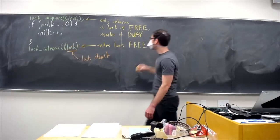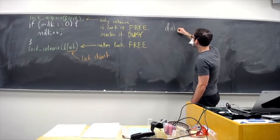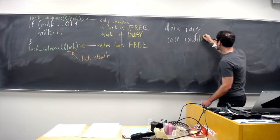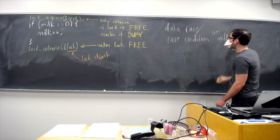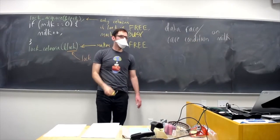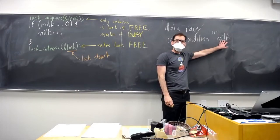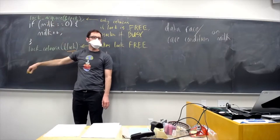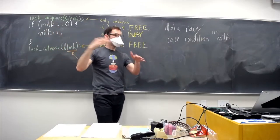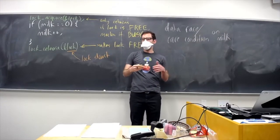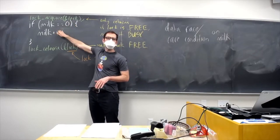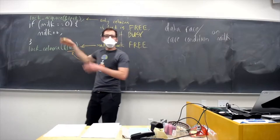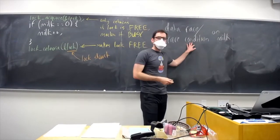Before I put the lock in, this code was subject to a data race or a race condition on our variable milk. This means that the behavior of this code depended on the exact scheduling — the exact order that threads got to run this code. They were kind of racing to see who got to check the milk first, and in what order they incremented it — did we increment milk once or multiple times? That is what is referred to as a data race.